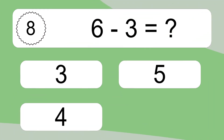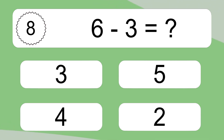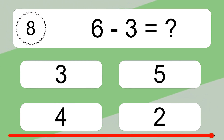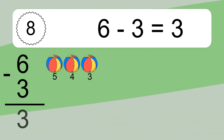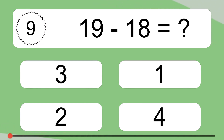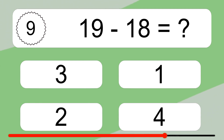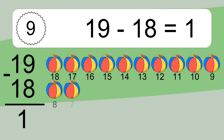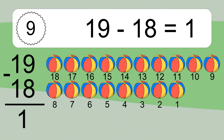6 minus 3 equals what? 6 minus 3 equals 3. Let's count it: 5, 4, 3. 19 minus 18 equals what? 19 minus 18 equals 1. Let's count it: 18, 17.